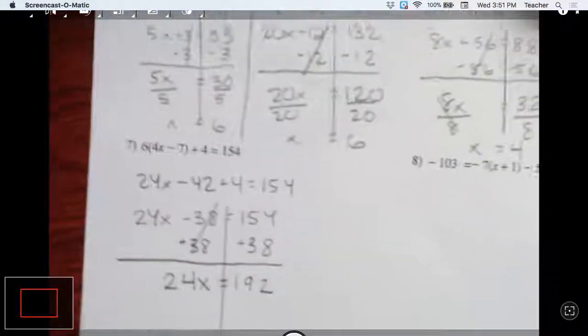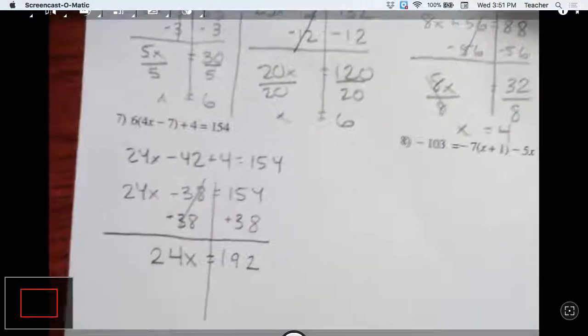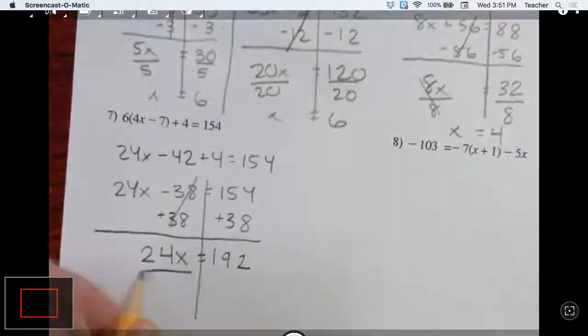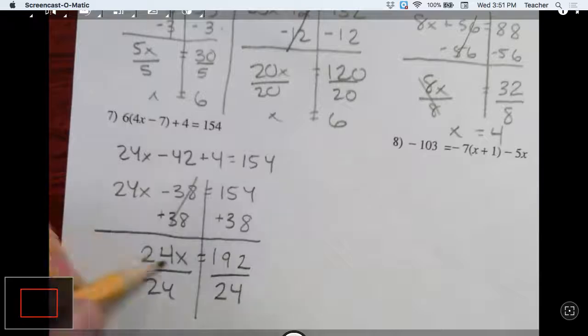And I get 192 equals 24x. Move this down a little. So what number times 24 is 192? We need to do some division.